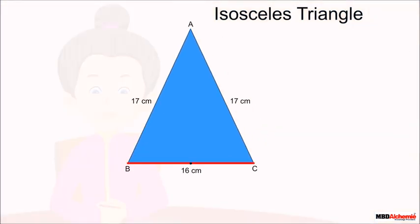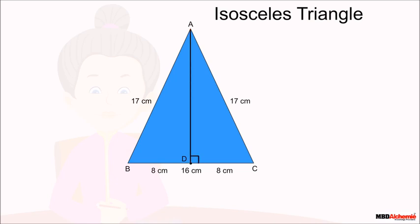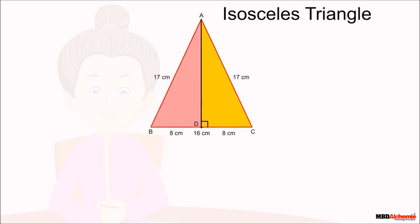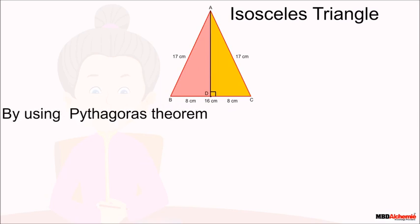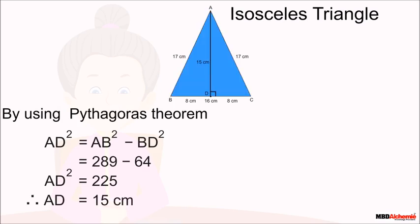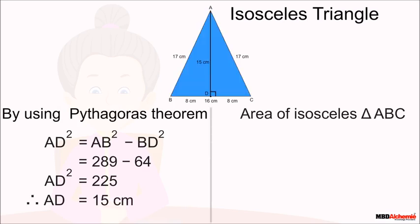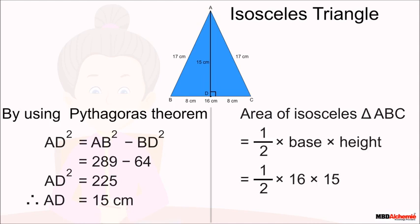To find the height, take the midpoint of the unequal side BC and mark it as D. Since BC is 16 centimeters, both BD and DC are 8 centimeters. Joining A and D, the triangles ADC and ADB are right triangles, so by Pythagoras' theorem AD is 15 centimeters. Sophie then finds the area using the formula: half times base times height.